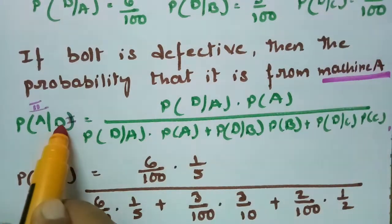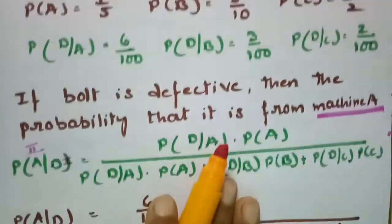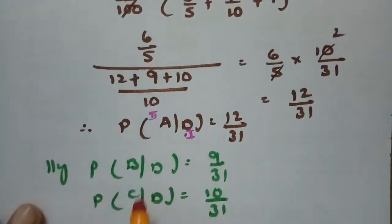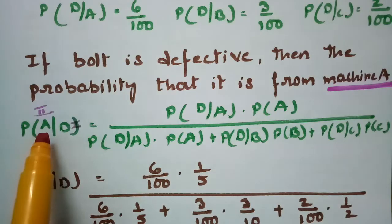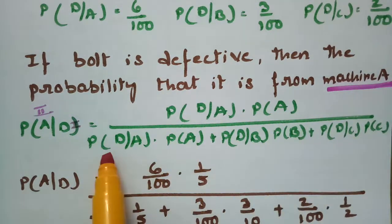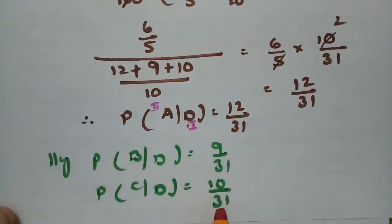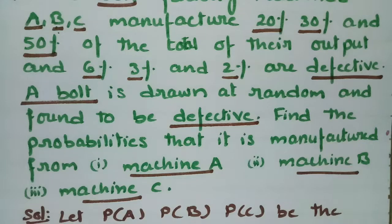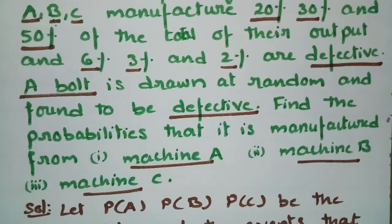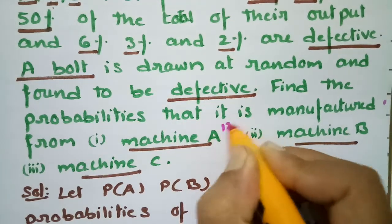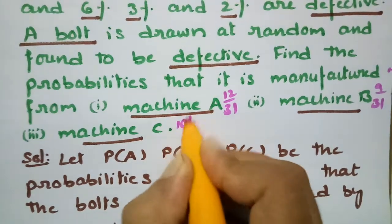Similarly, P(B|D) = P(D|B) × P(B) divided by the same denominator. After substituting all six values and calculating, we get P(B|D) = 9/31. The probability that the defective bolt is from machine C is P(C|D) = P(D|C) × P(C) divided by the same formula, giving 10/31. So the answers are: machine A = 12/31, machine B = 9/31, machine C = 10/31.